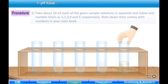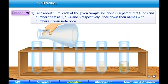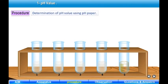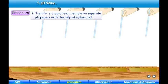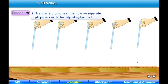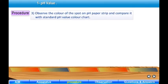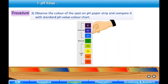Procedure: Step 1 — Take about 10 ml of each of the given sample solutions in separate test tubes and number them 1, 2, 3, 4, and 5 respectively. Note down their names with numbers in your notebook. Step 2 — For determination of pH using pH paper: transfer a drop of each sample onto separate pH paper strips with the help of a glass rod.